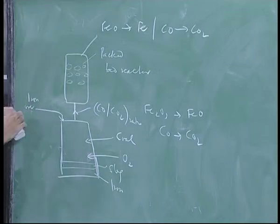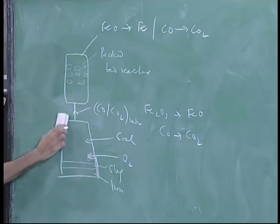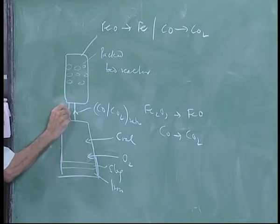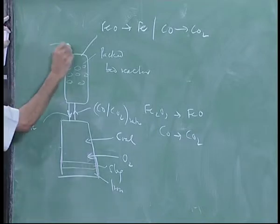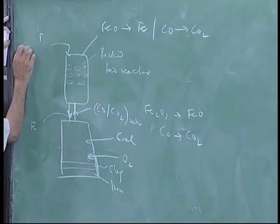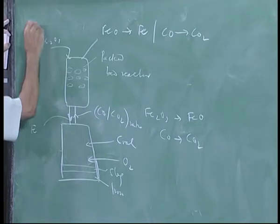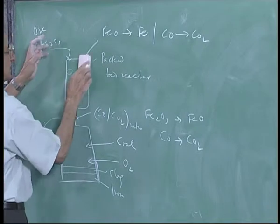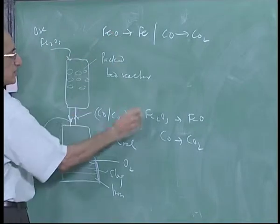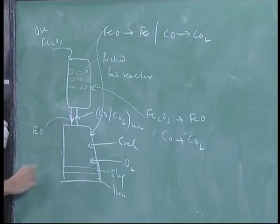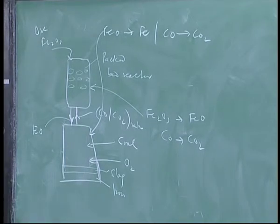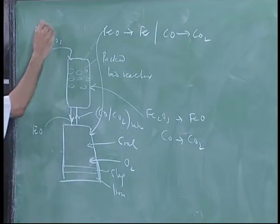Actually, I should not put iron ore here. Iron ore will go here. Actually, I forgot about 15 years since we did this. This is Fe2O3. Sorry. Yeah. This is Fe2O3. This is ore. I have got this backwards. This reaction occurs here. This reaction FeO goes in this. This goes here. What you get here is FeO. From the packed bed reactor Fe2O3 to FeO and then FeO gets reduced here.